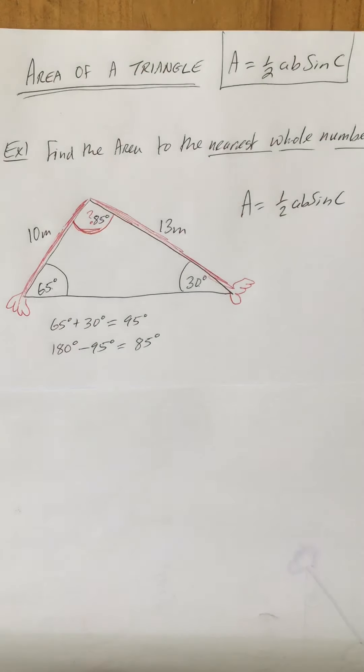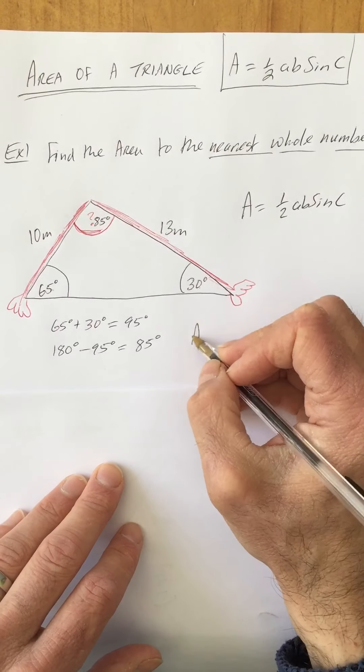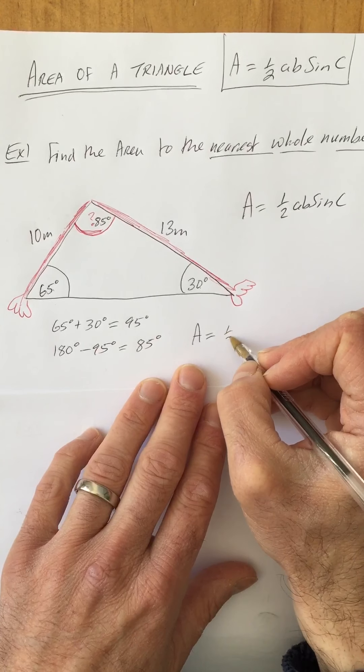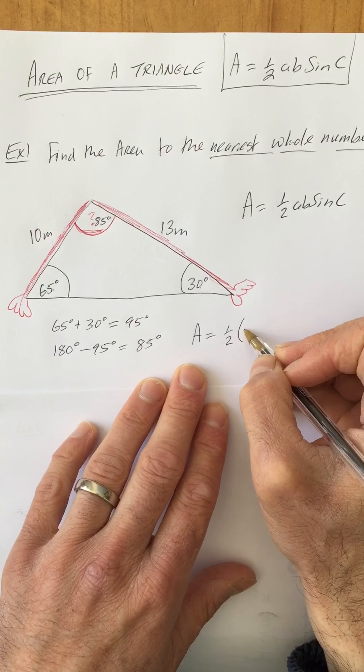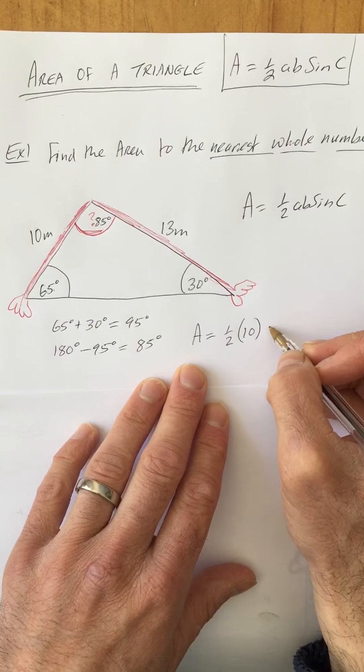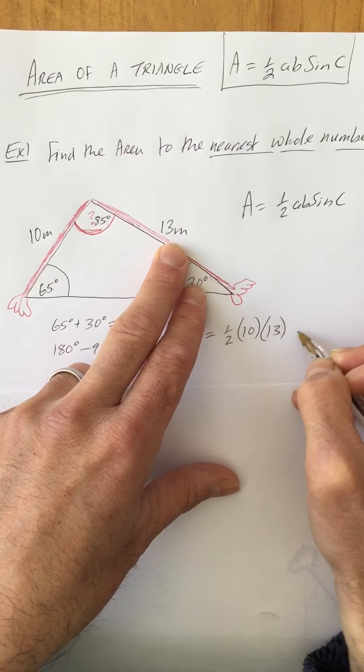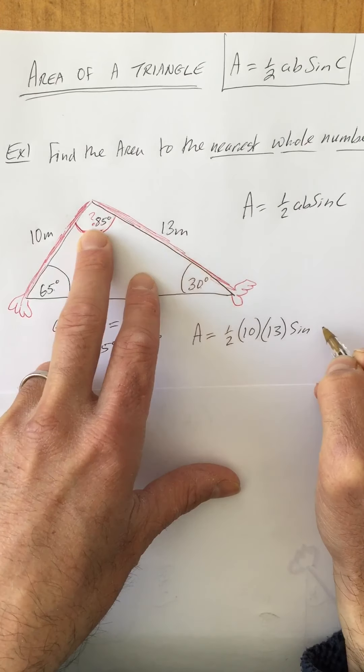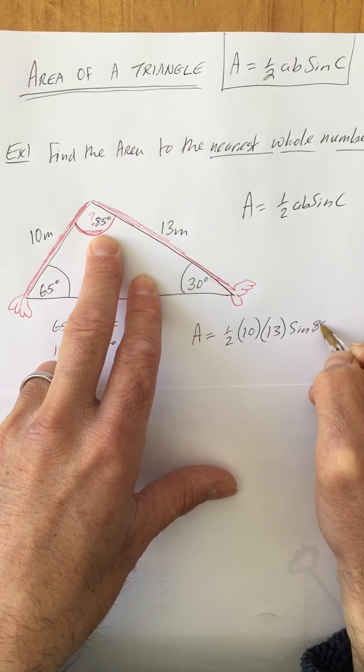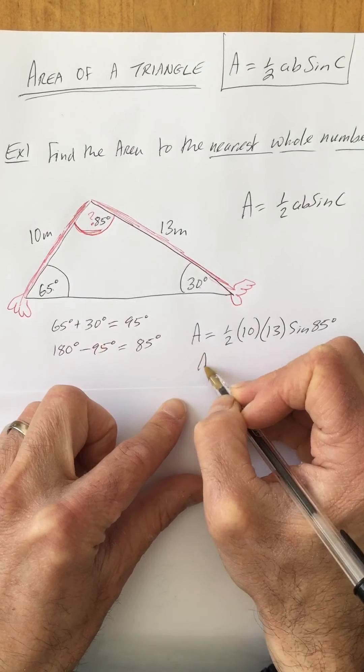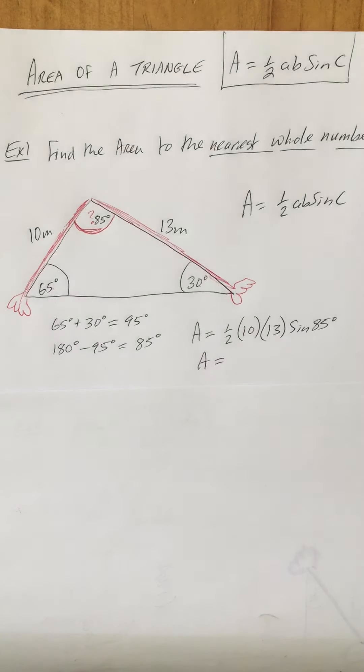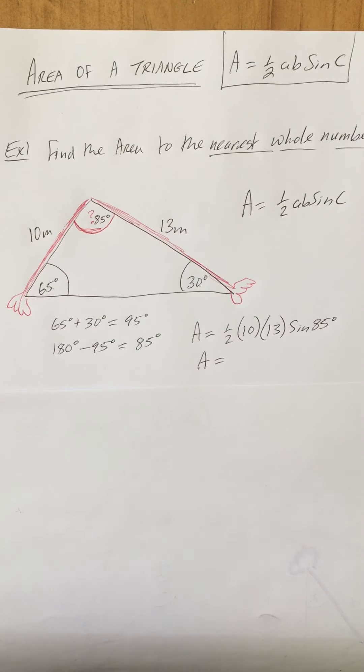So we've got 85 degrees. So I go back up here and mark in 85 degrees. Now I'm ready to use my area formula. The area is a half multiplied by my first arm which is 10, multiplied by my second arm which is 13, multiplied by the sine of the angle in between those arms which is 85 degrees. And all I have to do now is type that into my calculator and round it off to the nearest whole number.